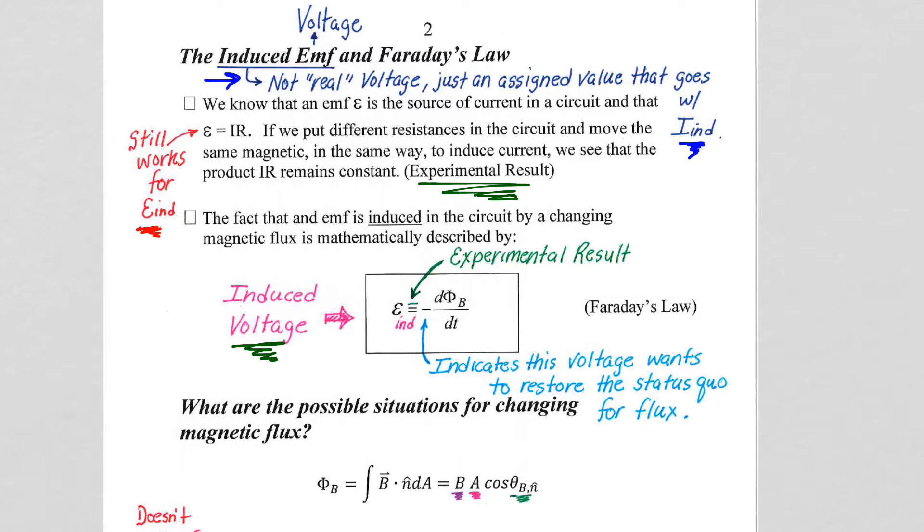This induced voltage is going to equal negative, mathematically, it is going to equal negative the time rate of change of the magnetic flux through the coil.